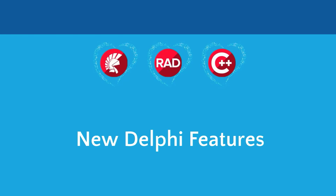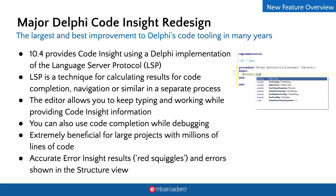Thanks Serena. Before handing over to Marco, there's one really big, amazing Delphi feature in 10.4 I'd like to introduce — in fact, one of the best improvements we've made in many years. That is redesigned Code Insight for Delphi. Code Insight is a set of productivity features within the IDE code editor, including code completion, parameter completion, error insight showing red underlines under errors, and find declaration. In Delphi 10.4 we have rebuilt Code Insight to use a Delphi implementation of the Language Server Protocol.